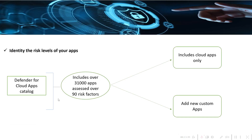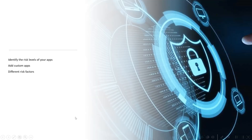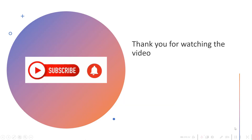That was all about understanding the risk level of your applications. To sum up, we discussed the different risk levels of applications, how to add a custom application to the Cloud App Catalog, and what the different risk factors are based on which the risk score is flagged for each application. Bye — till I come up with more use cases of Defender for Cloud Apps. Thank you so much for watching. Good day, bye.